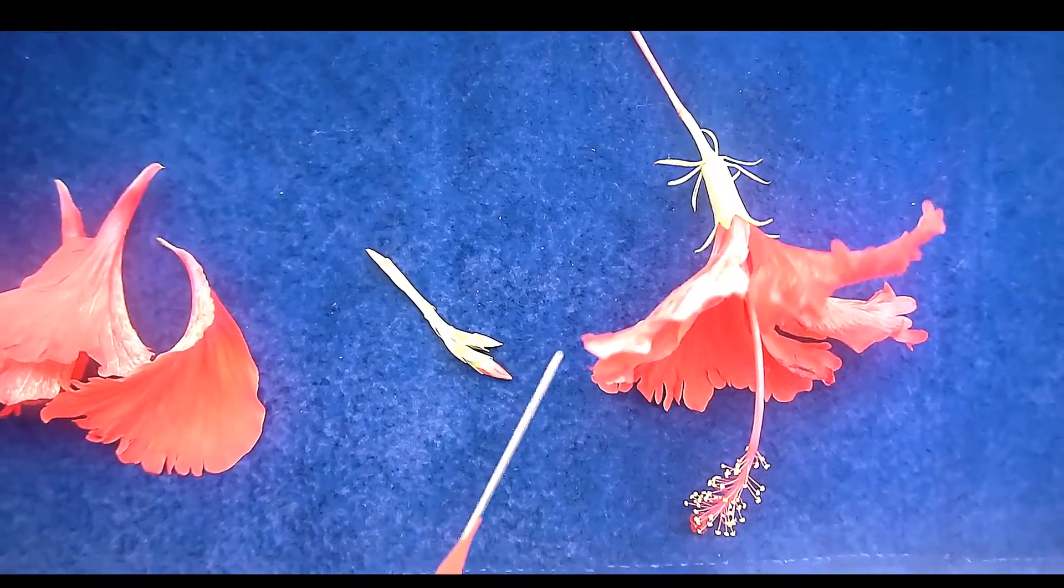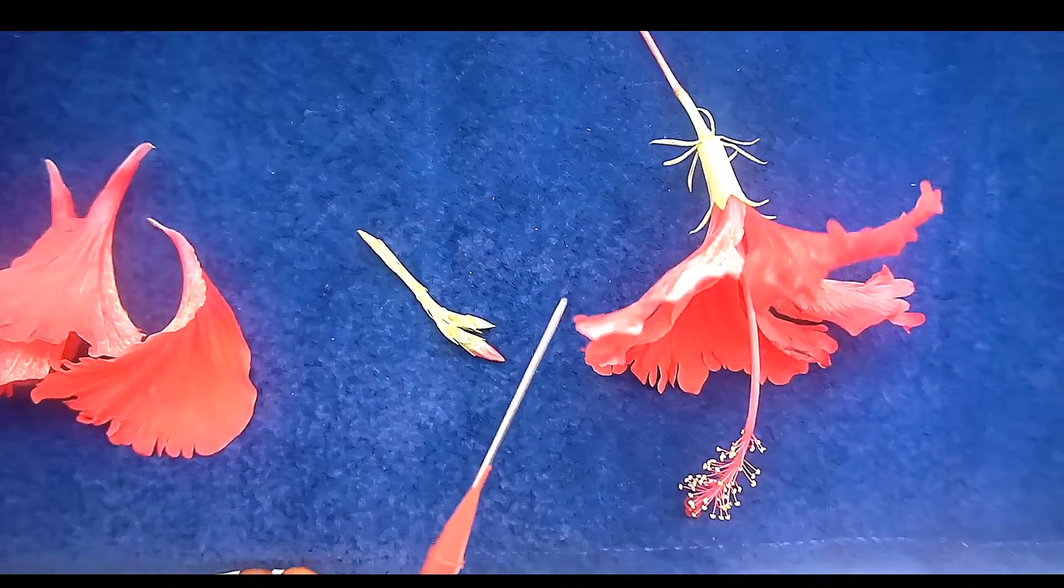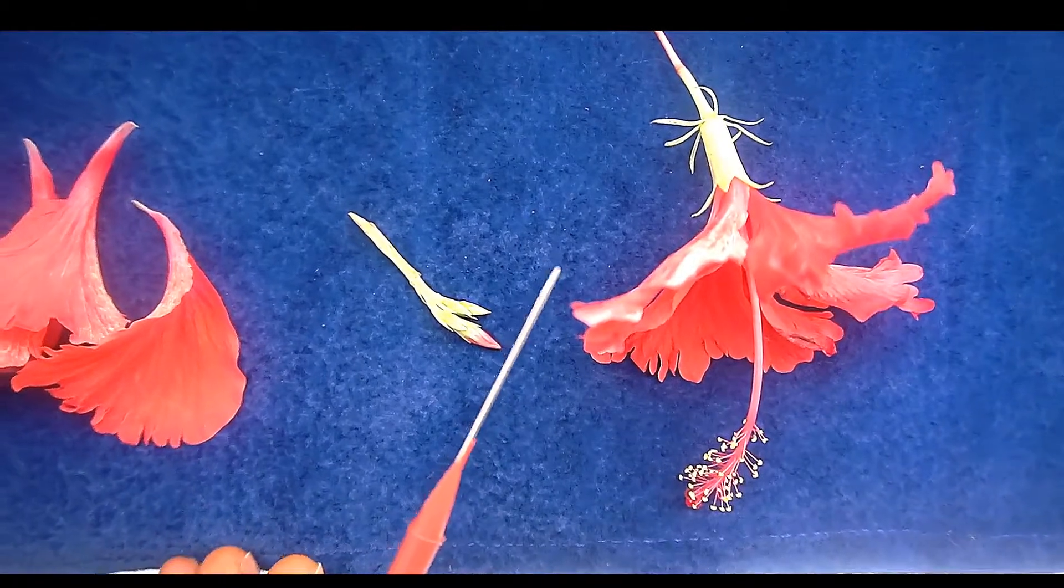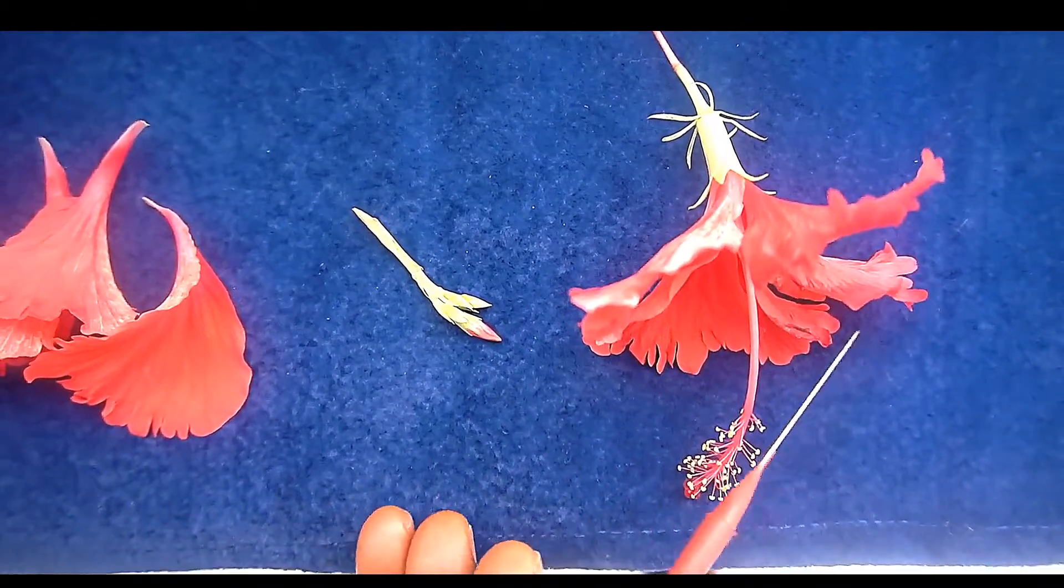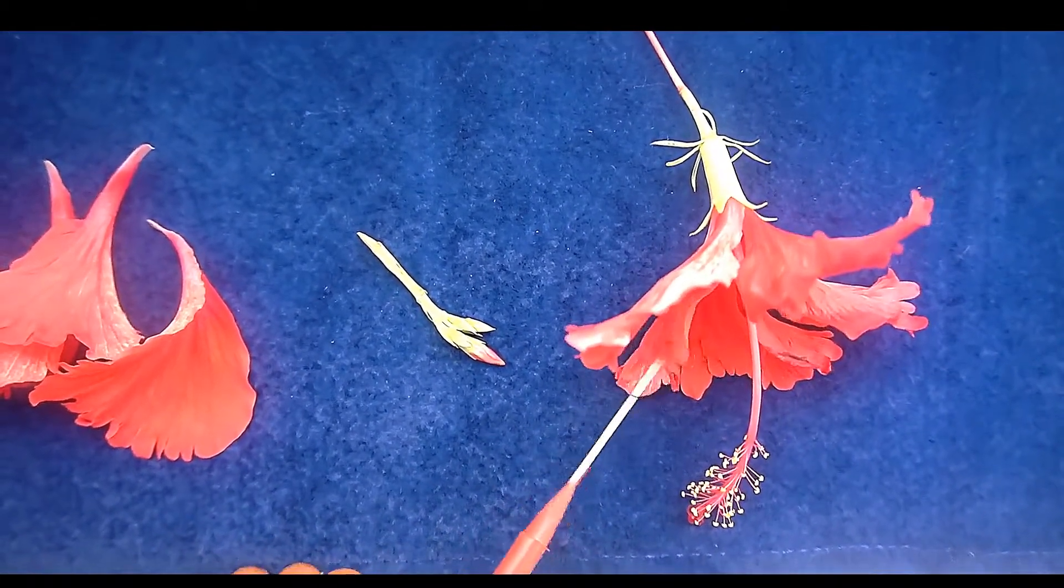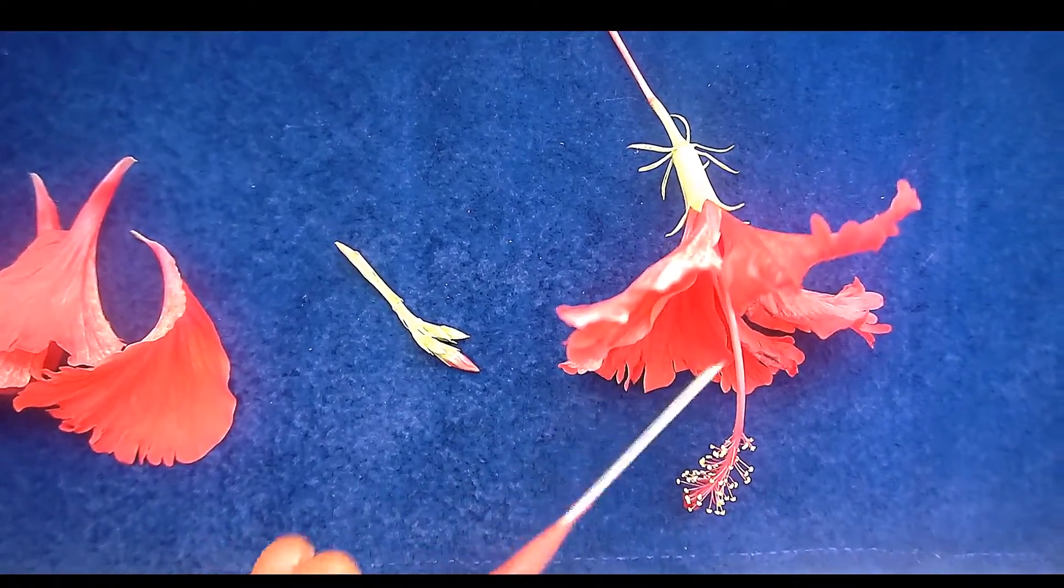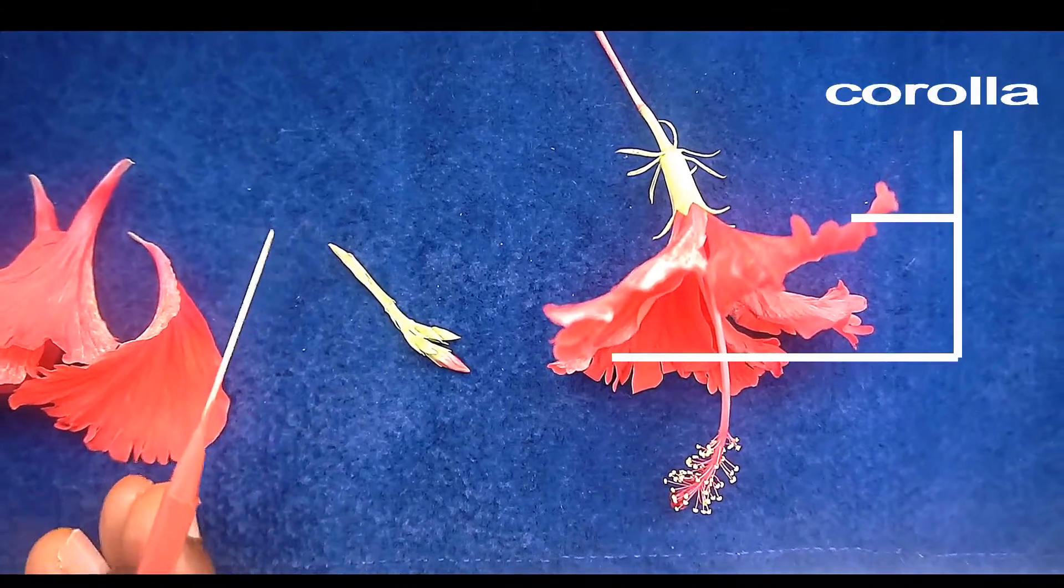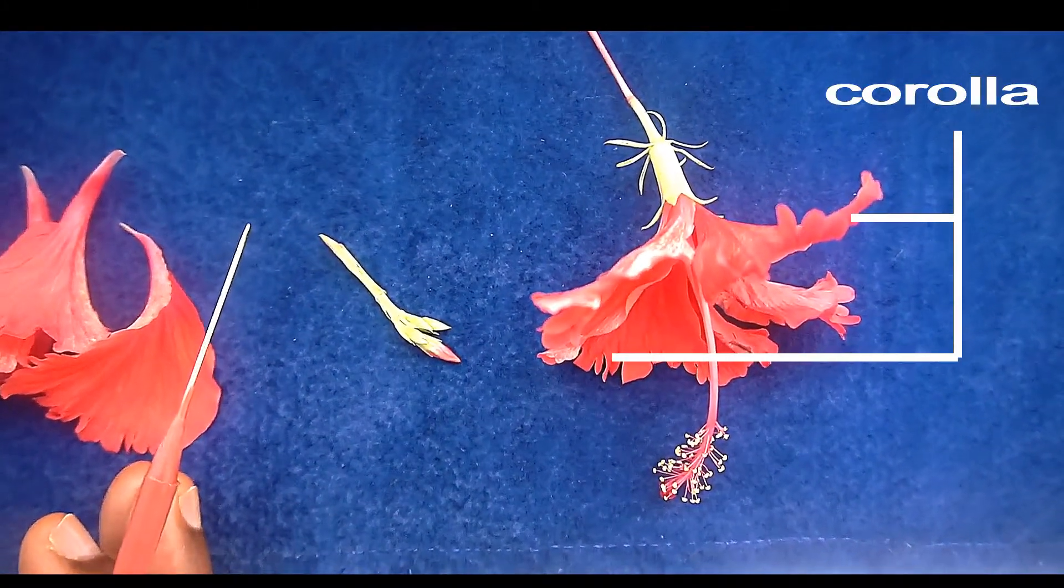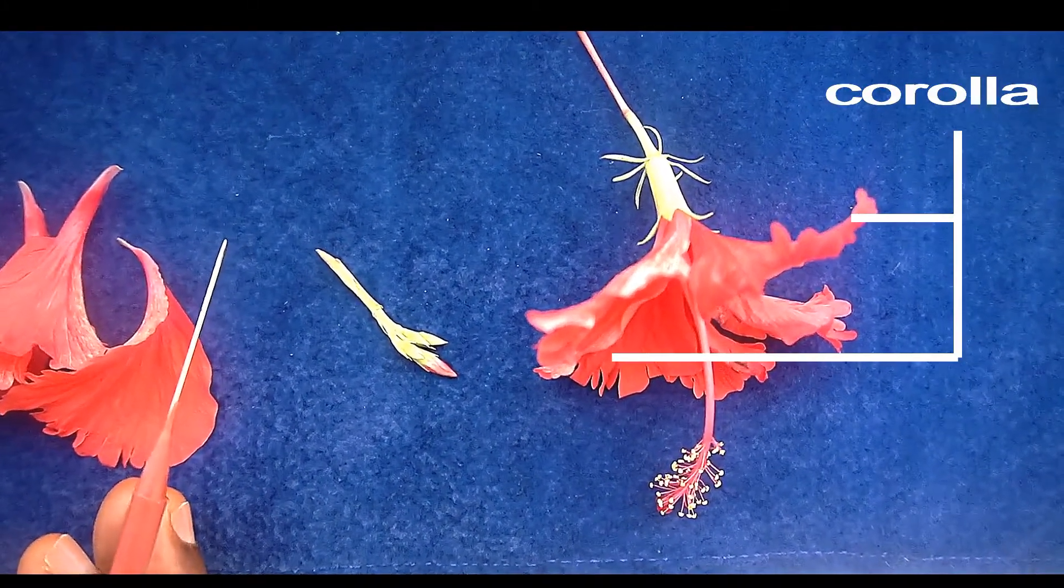Now, the part of the flower that does the calling, the calling out, is called the corolla. The corolla. There's a corolla. Corolla is from the Latin word crown, this crown.